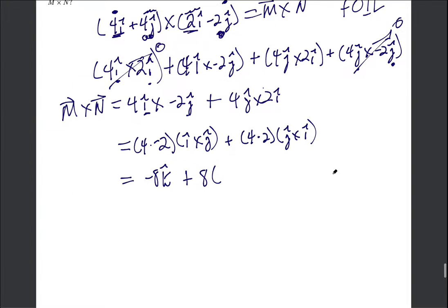But j cross with i is into the page, that's negative k. So this is negative k-hat. So what does that make the answer? That makes the answer negative 16 k-hat.